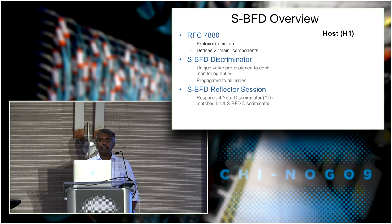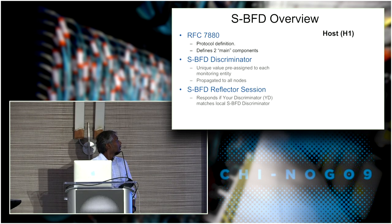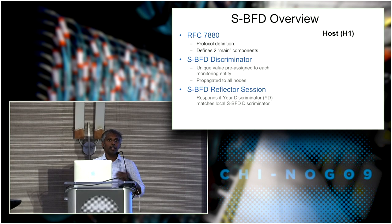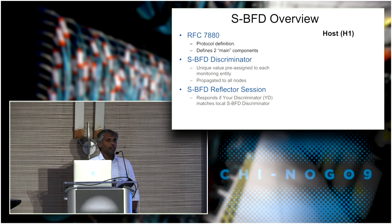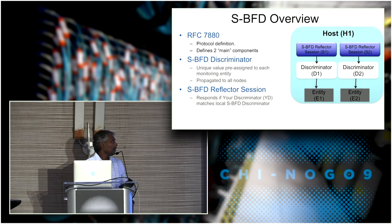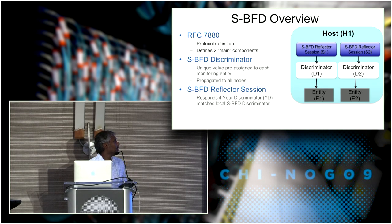The protocol definition is in RFC 7880, which documents the use cases for seamless BFD. Seamless BFD comprises two main components. One is the SBFD discriminator — the same 32-bit value — but the primary difference is how we assign and advertise it. For each entity, a discriminator is pre-assigned and propagated to other devices through IGP protocol extensions. Protocols like OSPF, ISIS, BGP, and even L2TP have been extended to carry this discriminator, so any node can look it up in the database without negotiation.